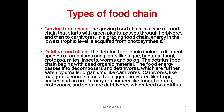Types of food chain: there are mainly two types — grazing food chain and detritus food chain. In the grazing food chain, food starts with green plants, passes through herbivores, and then to carnivores. In a grazing food chain, energy at the lowest trophic level is acquired from photosynthesis.